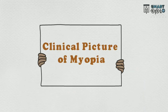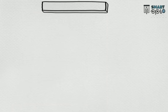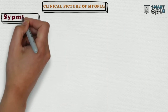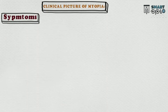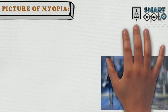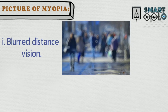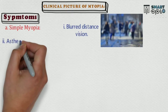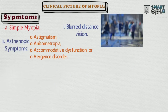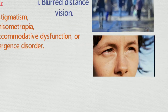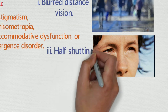Clinical picture of myopia. Let's start. Symptoms of myopia. A. Simple myopia — symptoms are: 1. Blurred distance vision. 2. Asthenopic symptoms due to astigmatism, anisometropia, accommodative dysfunction, or binocular disorder. 3. Off-squinting of the eye.